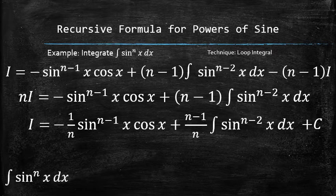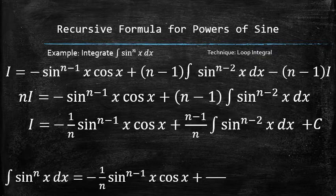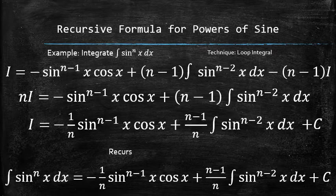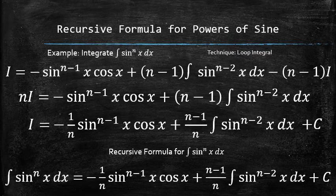Replacing i with the original integral, we now have the formula that relates the integral of the nth power of sine to the integral of sine raised to the power n minus 2, which we can find using this exact formula. We call this the recursive formula for finding the integral of the sine raised to any power n.